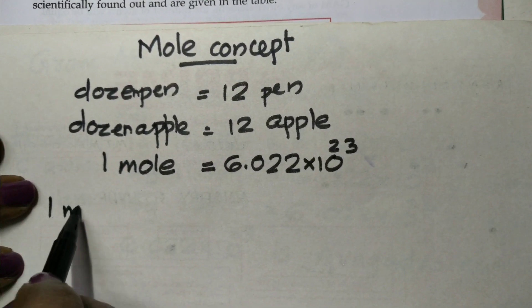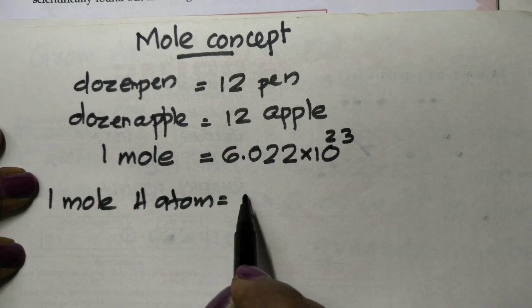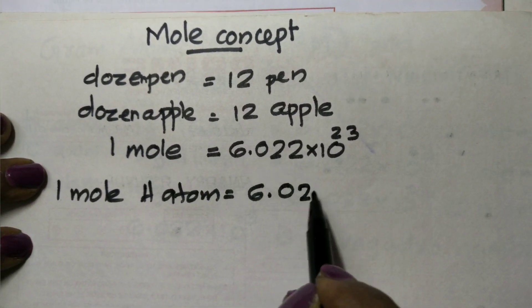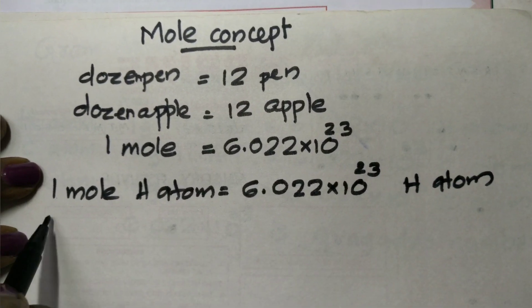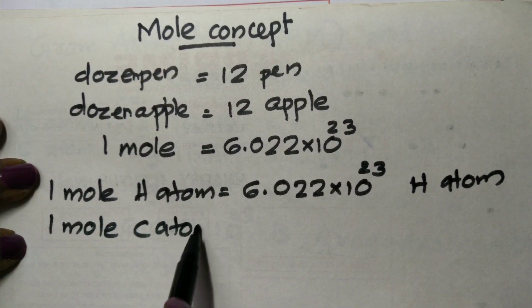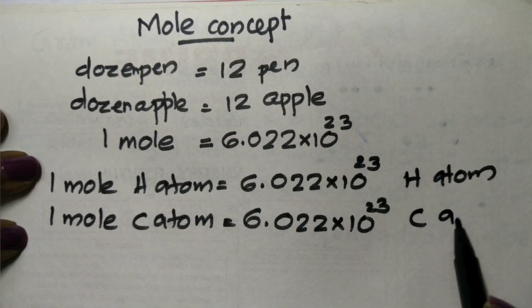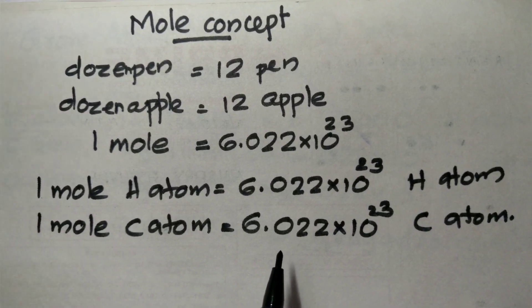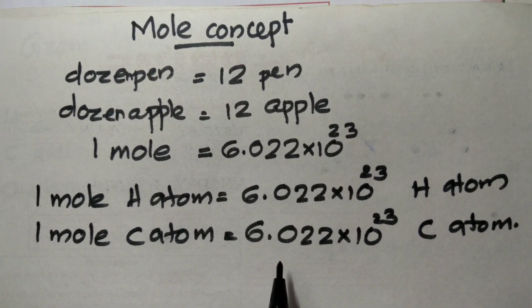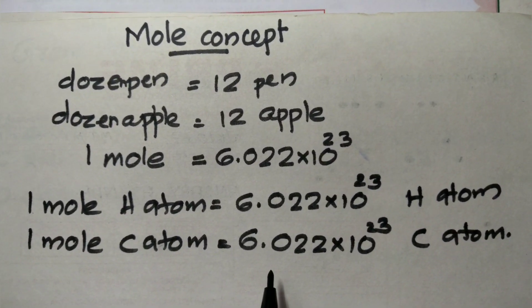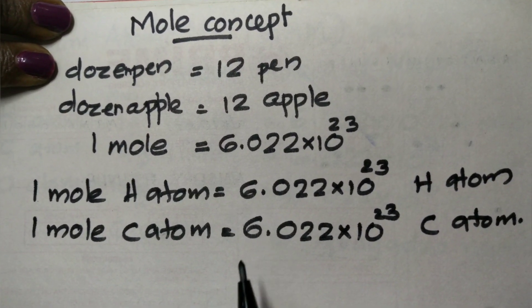So what do we say? 1 mole of hydrogen atom means 6.022 into 10 raise to 23 hydrogen atoms. 1 mole carbon atom means 6.022 into 10 raise to 23 carbon atoms. 1 mole pen means 6.022 into 10 raise to 23 pens. That is the mole concept.